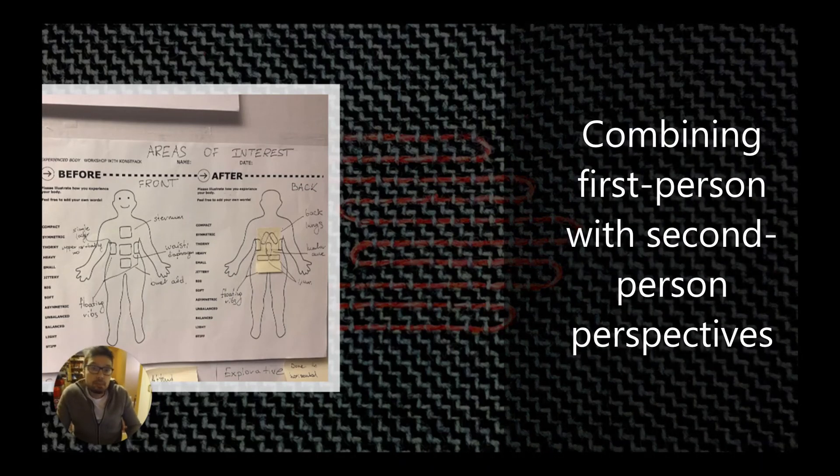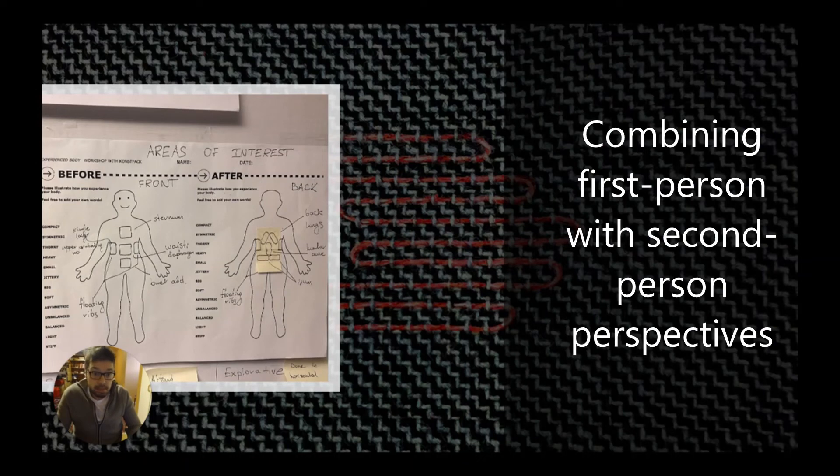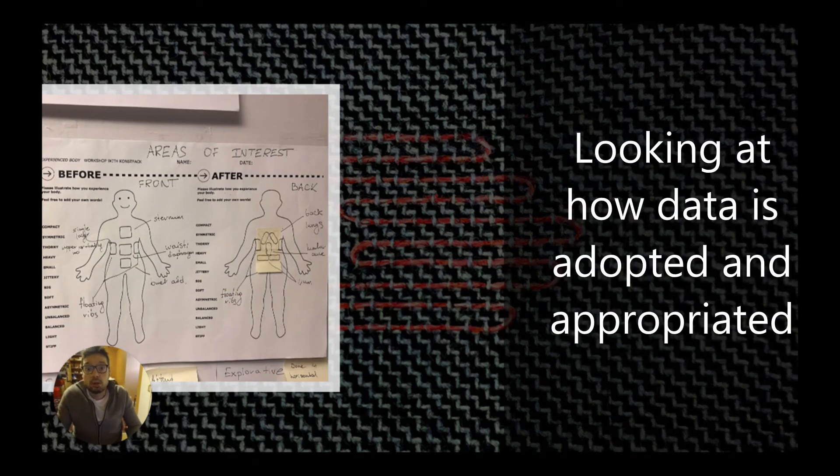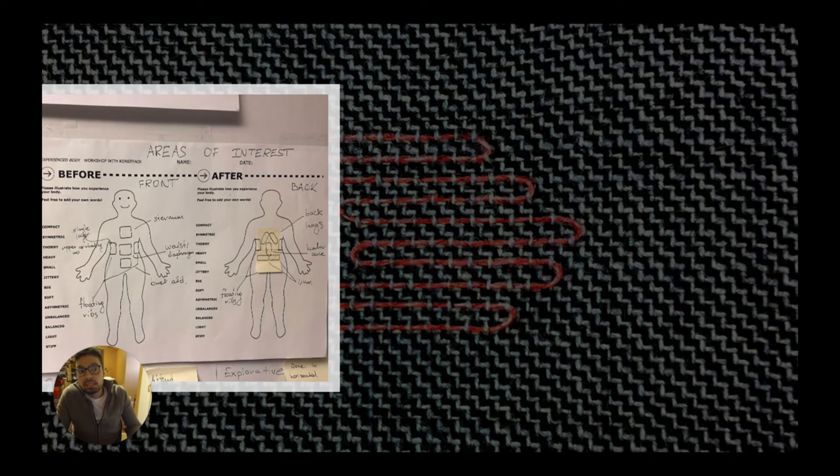We also show how combining first-person with second-person methods over time highlights differences in how different bodies and behaviors are registered differently by sensors and data sources. Third-person methods that inquire into adopting, appropriating, and understanding data into the everyday lives of different users can also play a role in scaffolding new relationships with sensing technologies and data during the design process.